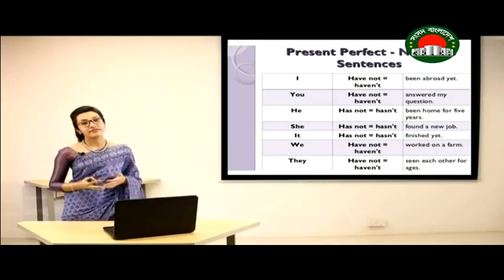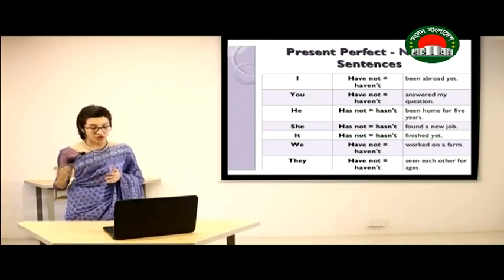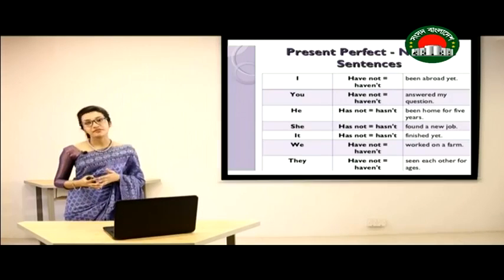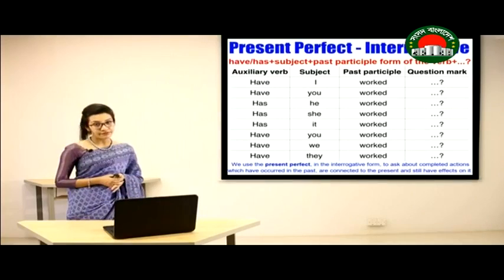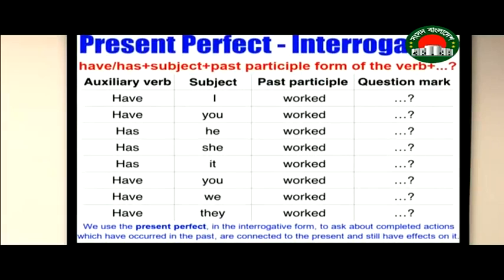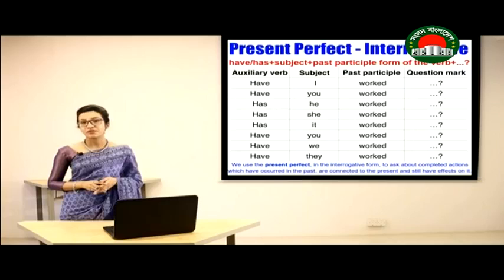In all negative cases, we use the subject, then have not or has not, then the past participle form of the verb. For interrogative sentences, we start with have or has, then the subject, then the past participle form of the verb, ending with a question mark. We use this interrogative form to ask about completed actions which occurred in the past, are connected to the present, and still have effects on it.